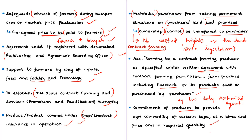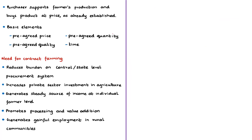Based on the legislation, it is a formal agreement only. The producer or seller commits to provide an agricultural commodity of a certain type at a specific time and price, and in the quantity required by the buyer. In turn, the purchaser, usually a company, undertakes to support the farmer's production and agrees to buy the product at a price established in advance. Contract farming usually involves pre-agreed price, quality, quantity and time to provide the produce.